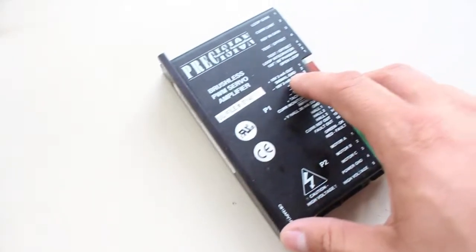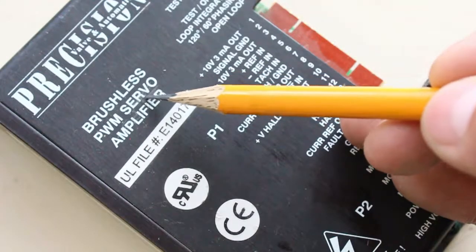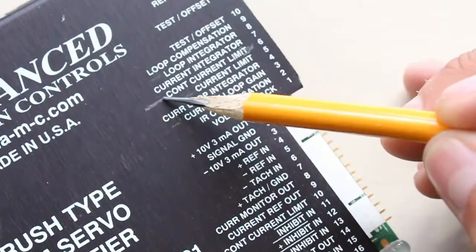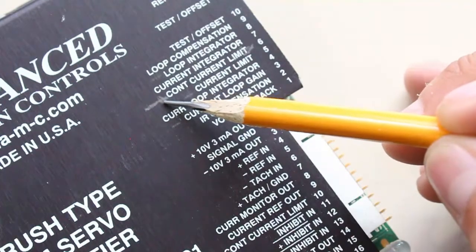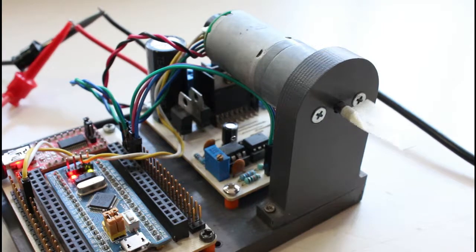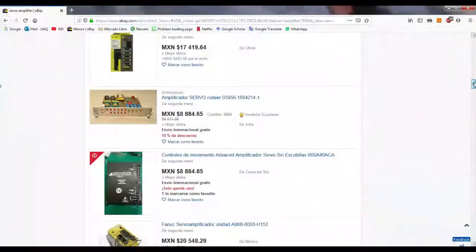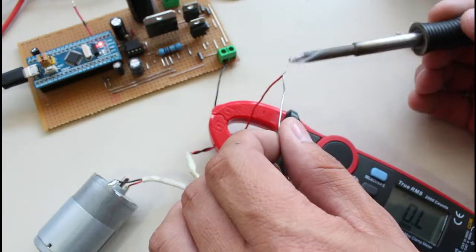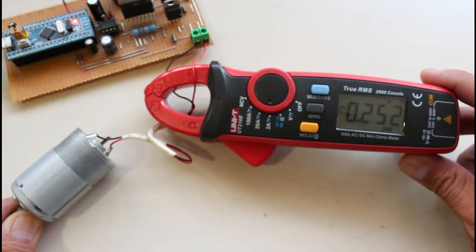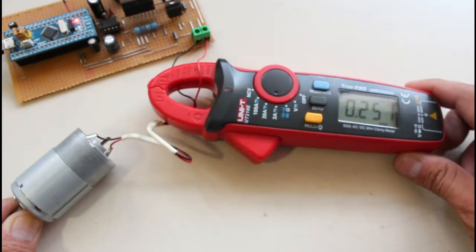A servoamplifier not only increases the current to power a motor, but also regulates the current that flows through the motor armature. Thus, the motor and amplifier become a torque supply, which is very useful if we want to control the speed and motor position. However, a servoamplifier is quite expensive. Therefore, in this video, I will show you how to make a DIY servoamplifier to regulate the current of a DC motor.